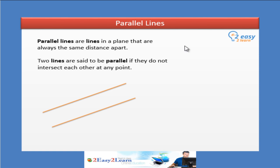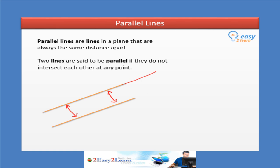Parallel lines are lines in a plane that are always the same distance apart. If we look at these two lines, the distance between these two lines is always the same — it will never change at any point. Two lines are said to be parallel if they do not intersect each other at any point. If you extend these two lines, they will never intersect. You can show these two lines are parallel by marking arrowheads on them.